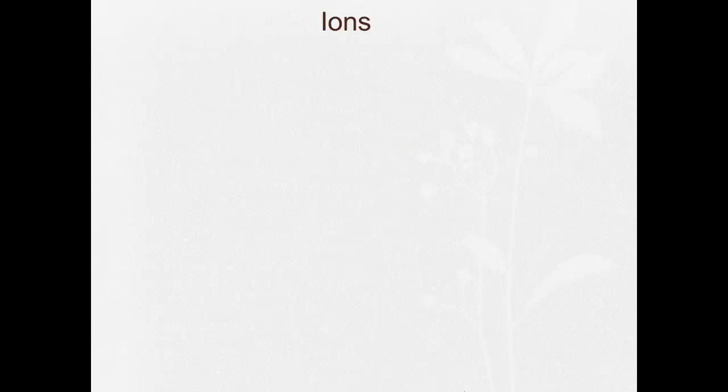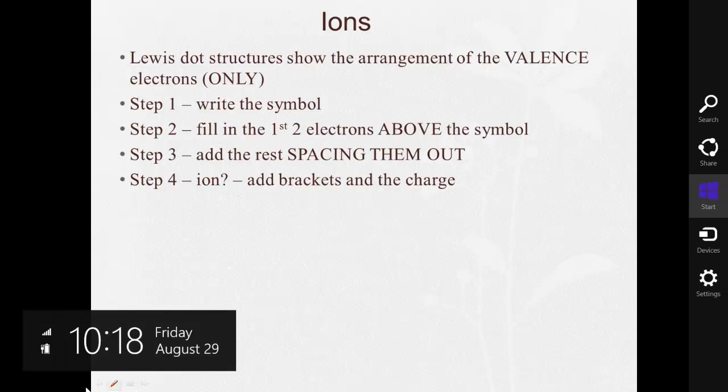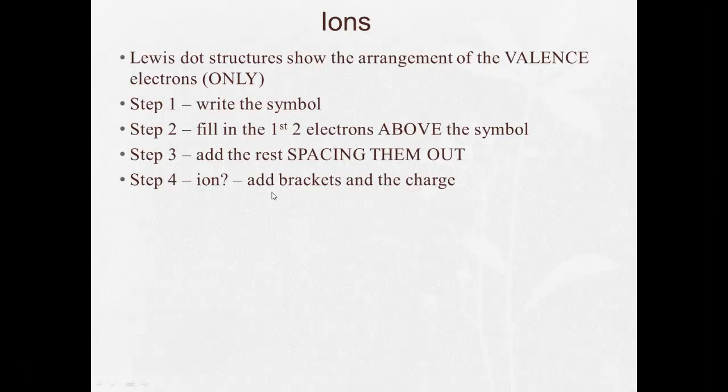Now, the next thing we have to think about for Lewis dot structures are ions. Once again, shows the arrangement of the valence electrons only. Step 1, write the symbol. Step 2, fill the first two above the symbol. Step 3, add the rest, spacing them out. Then we have to say, if it's an ion, we have to add brackets and a charge.